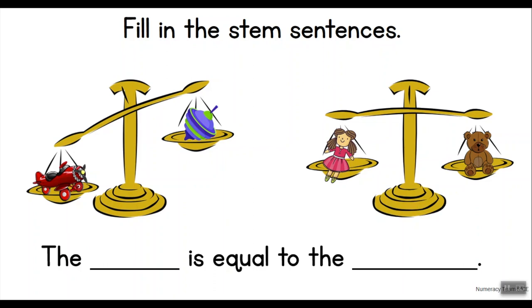No, children. When both pans remain in line, it means that the weight on one side is the same as the weight on the other side, so the pans balance out. That is also why it is called a pan balance. So here we can say that the doll is equal to the teddy bear.